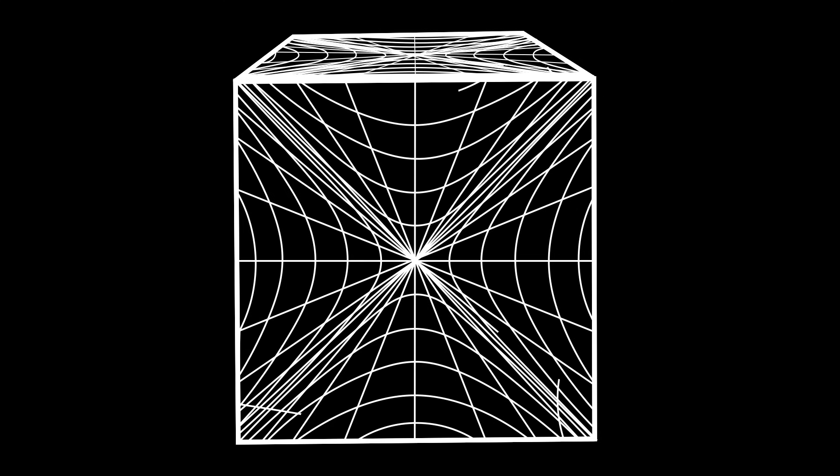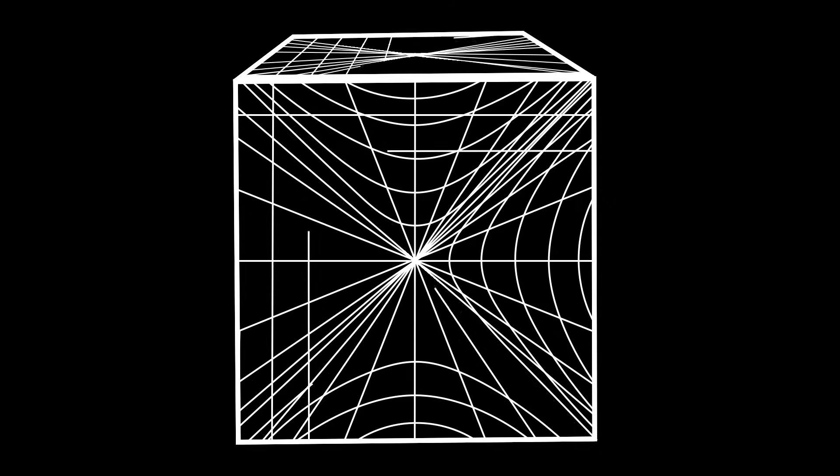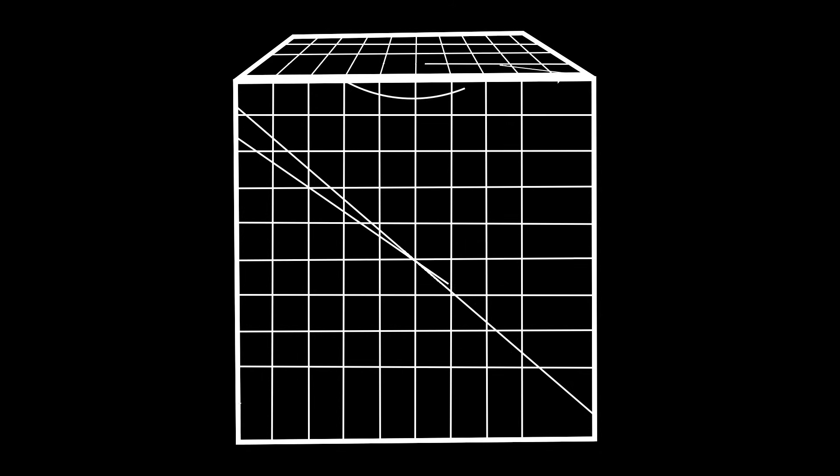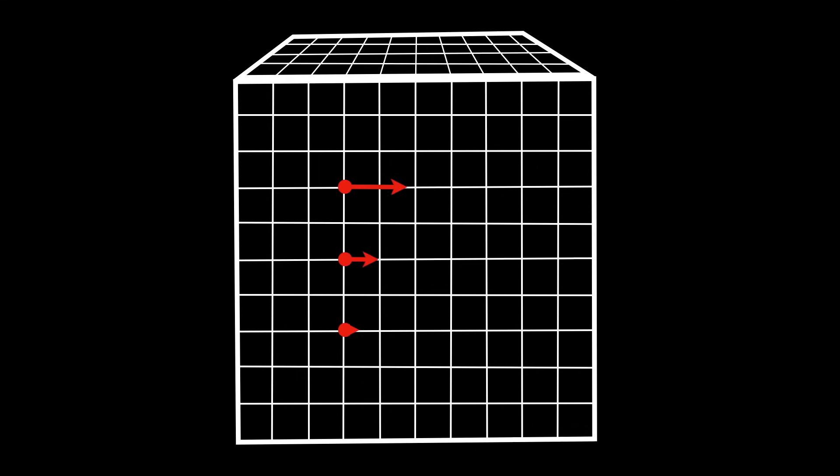If it's negative, they diverge. If it's zero, they stay parallel, as if space were flat in that direction.